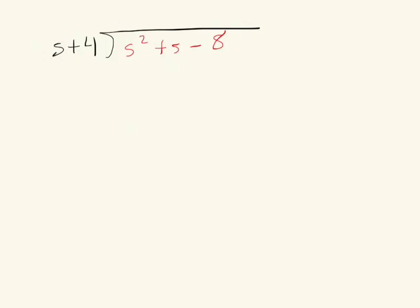If you arrange it like that, then we can start. When we had it the first way, you're going to run into an error. This is going to be s times what gives me s squared, and that'll be just s. S times s gives me s squared, s times 4 gives me 4s.